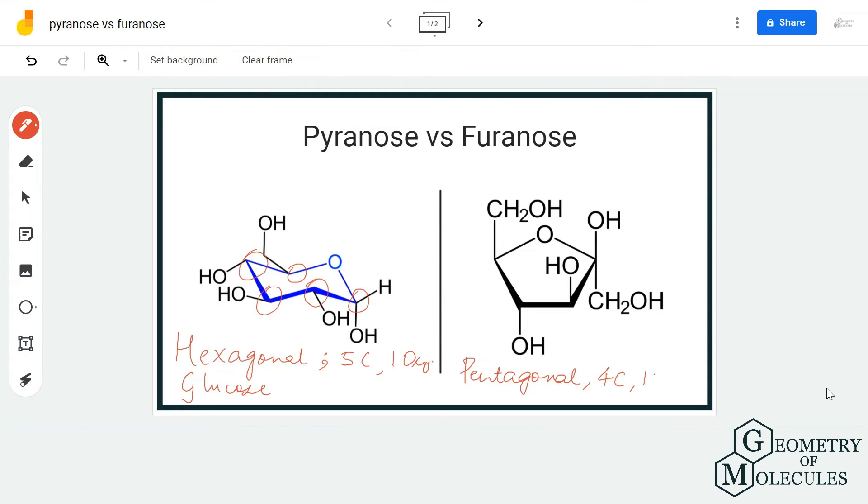That one is pentagonal. There are five carbon atoms in pyranose and four carbon atoms in furanose. The common example you will come across for furanose is fructose, because it has a furan ring in its structure.